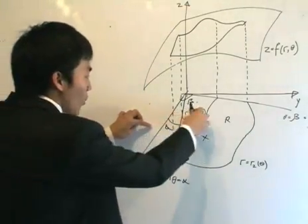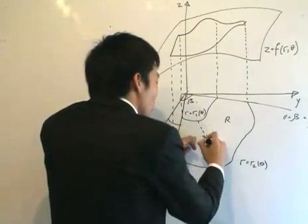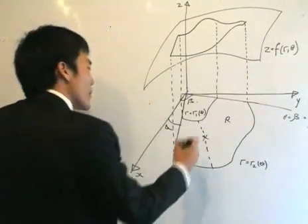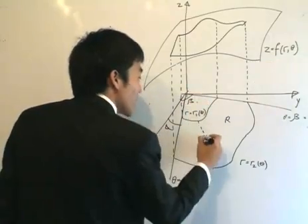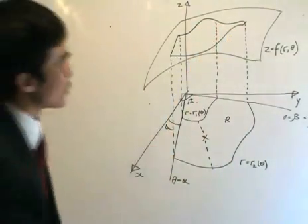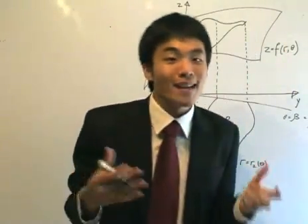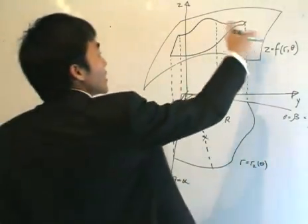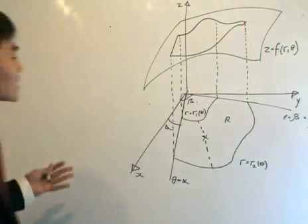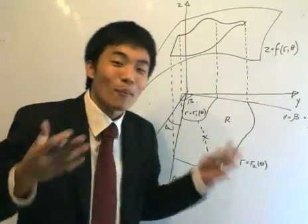When theta equals a particular angle there are still many points in the region R along that ray — essentially all points at different values of R. So if I pick a specific value of R and a specific theta, I get a Z coordinate on the surface. Don't be confused: Z is a function in terms of R and theta. We can now pose the problem of finding the volume bounded between the region R and the surface Z = f(R, theta), where the function is always greater than zero over region R.